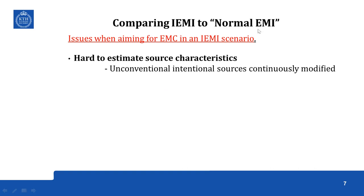Comparing IEMI to normal EMI: in a normal EMI scenario, we assume we know something about the source in that particular environment. However, in an IEMI scenario, it is very hard to estimate source characteristics because we do not know what kind of source the perpetrator will have. Unconventional industrial sources are continuously modified, so a continuous evaluation of threat perception based on freely available technologies is needed.